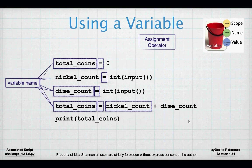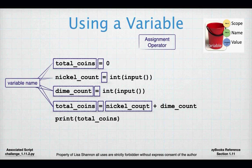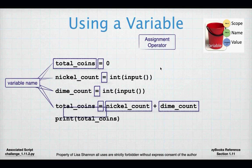So how do variables relate to one another? By name. A variable has to be unique, and when you see 'nickel_count', it's 'nickel_count' everywhere. The value associated with nickel_count travels around with its name. We have dime_count and total_coins as well.